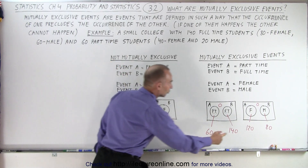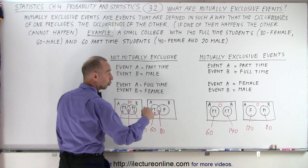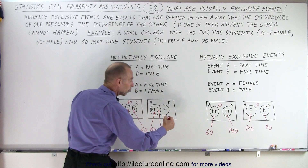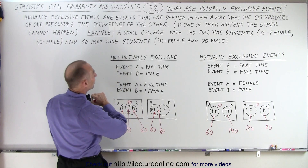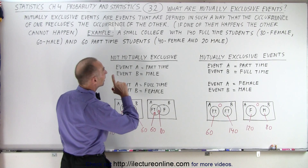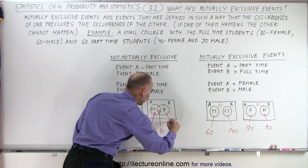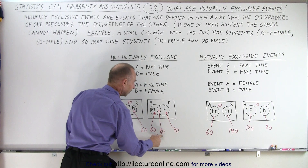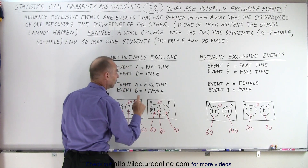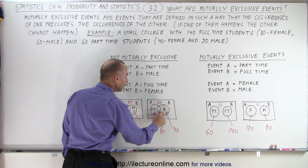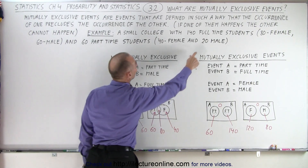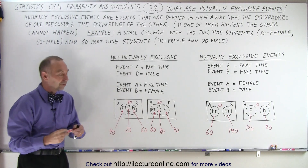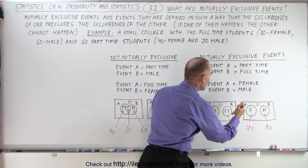How many total female students are there? There's a total of 120 female students, and 80 of them are full-time. That means the rest — 40 — are part-time female students that go in the non-overlapping part of the female circle. So notice we have 60 plus 40 is 100, plus 80 is 180. That means there are 20 students left that are neither full-time students nor female students — they're part-time and male — and there are only 20 part-time and male students, so that's why the 20 goes there.